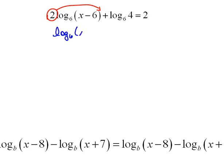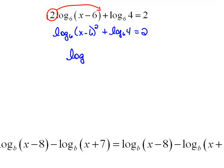So we'll have log base 6 of x minus 6, quantity squared, plus log base 6 of 4, equals 2. Now I can work with them — the two logs separated by a plus can be put back together with multiplication. This would be log base 6 of 4 times the quantity x minus 6 squared, equals 2.